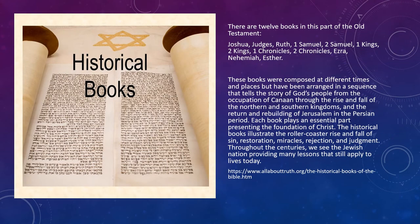There are 12 books in this part of the Old Testament, listed on your screen. These books are composed at different times and places, but they have been arranged in a sequence that tells the story of God's people from the occupation of Canaan through the rise and fall of the northern and southern kingdoms and the return and rebuilding of Jerusalem in the Persian period.